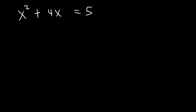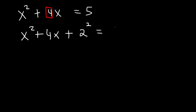So to complete the square, take half of the number in front of x, which is 2. Half of 4 is 2. And square it. So we're going to add 2 squared to both sides. Whatever you do to the left side, you must also do to the right side.